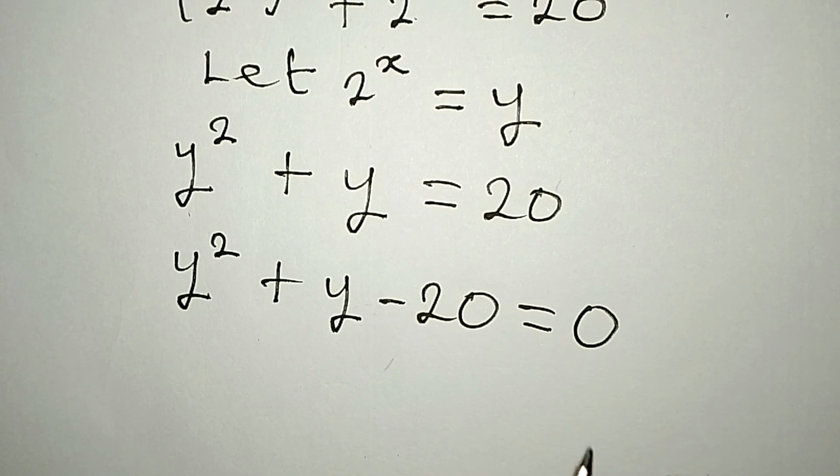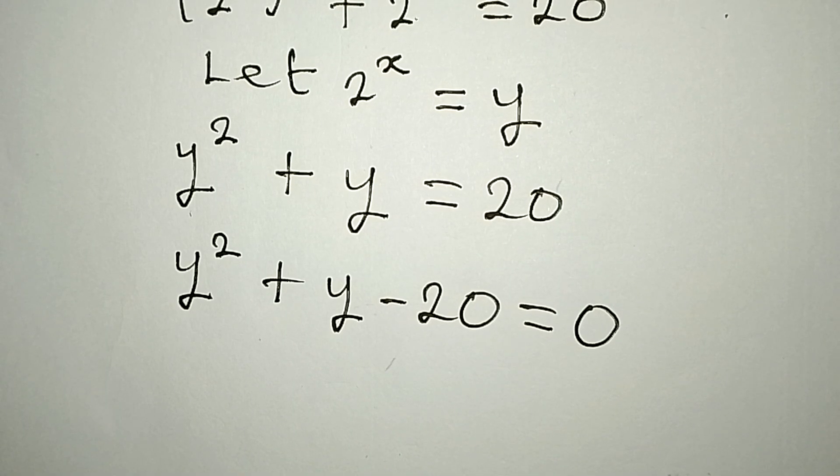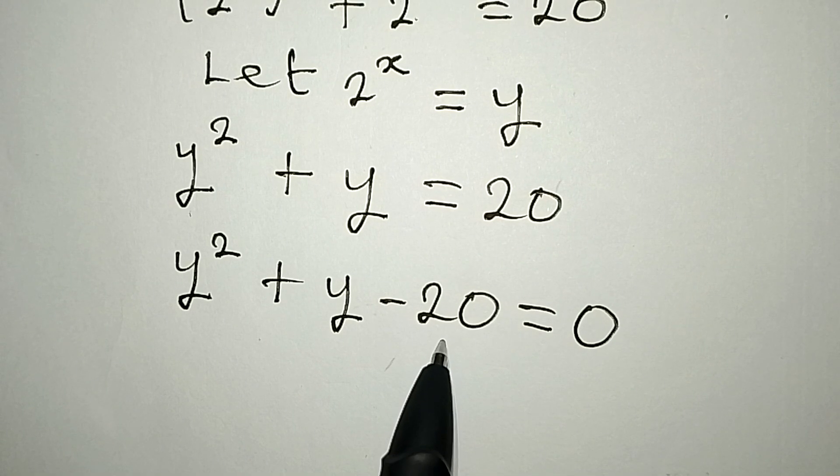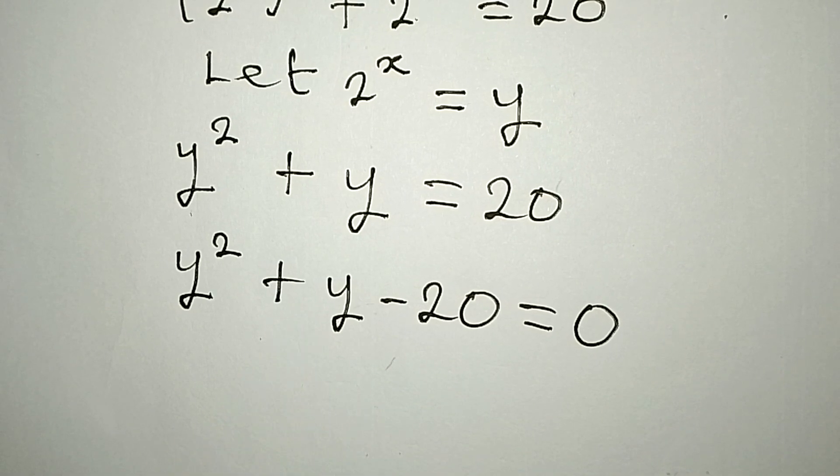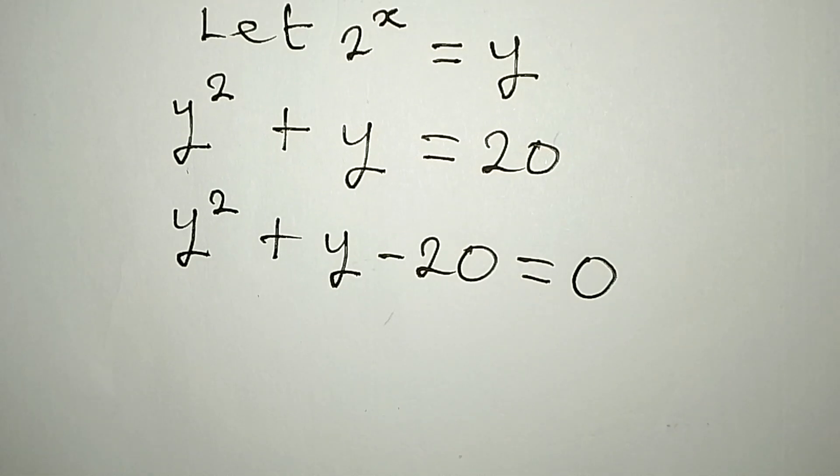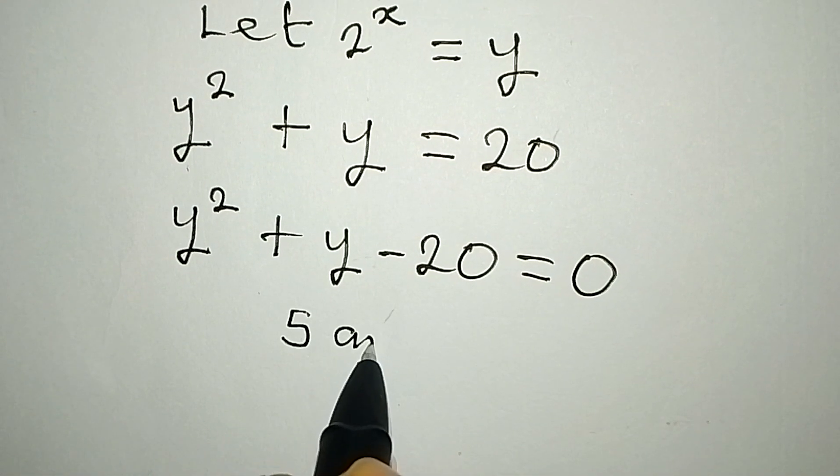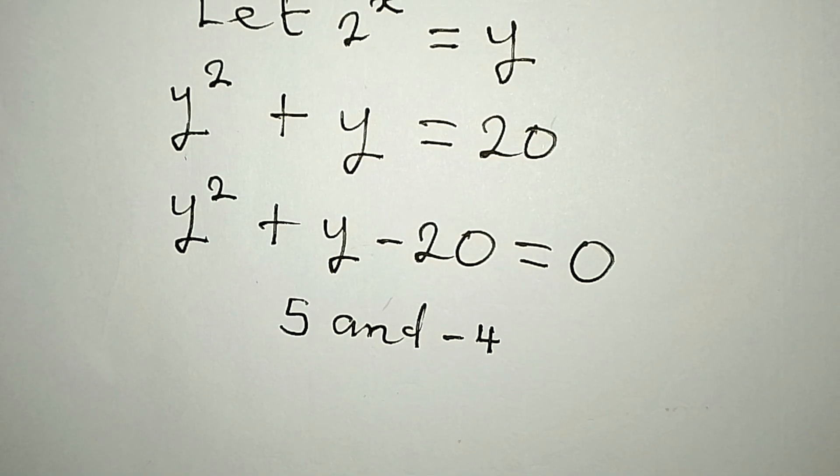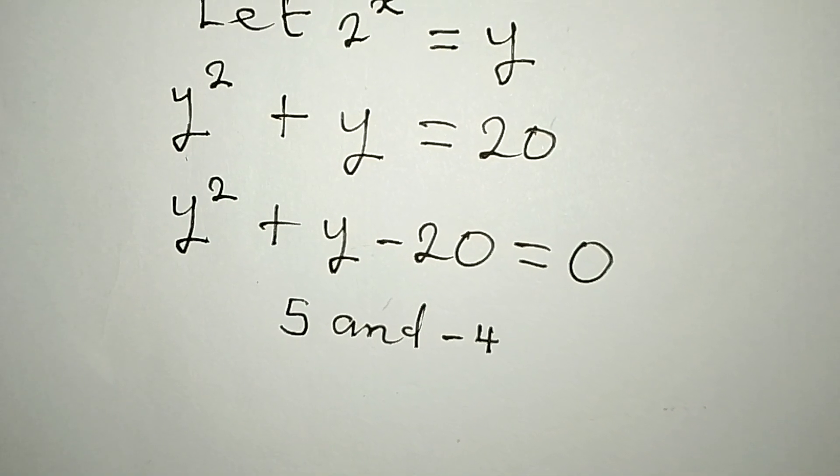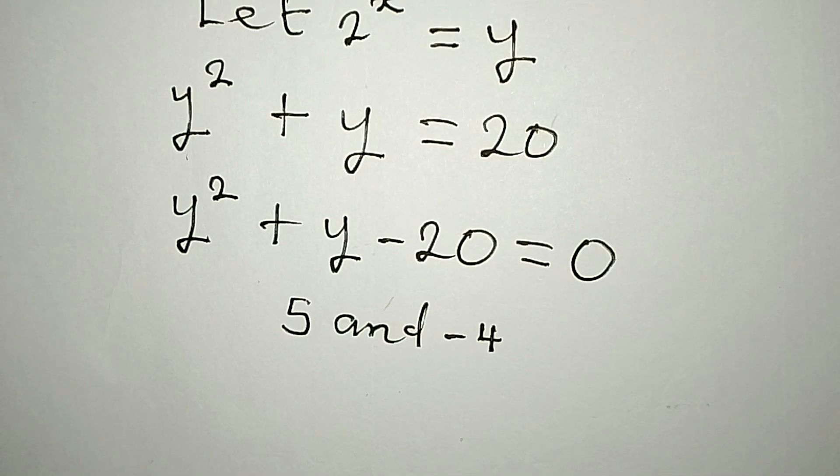Right now what do we do? Two numbers we multiply to get minus 20, and when I put them together to get 1. The numbers will be 5 and minus 4, because 5 times minus 4 will give minus 20, and then 5 minus 4 will give 1.